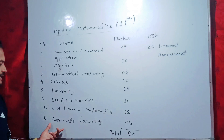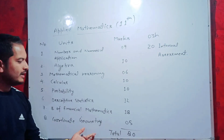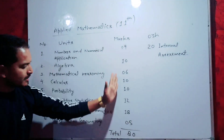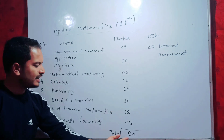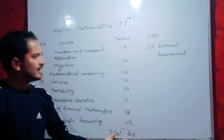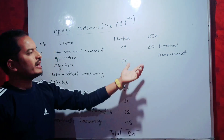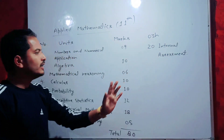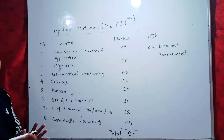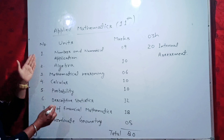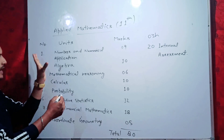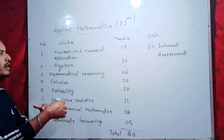The total of these marks is 80 marks. In 3 hours you will have 80 marks and 20 marks for internal assessment, so the total is 100 marks. There are basically 8 chapters and these 8 units are divided accordingly.